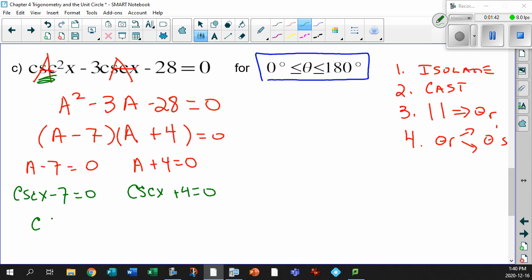Bring this over. Cosecant x equals 7, and cosecant x equals minus 4. Now, we've done the isolate. Let's do the cast. But remember, watch out for our restriction. That's going to be really important, because that's going to save us a whole bunch of time. And let me show you why.